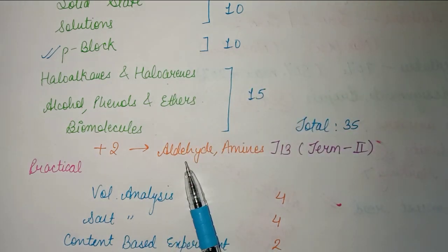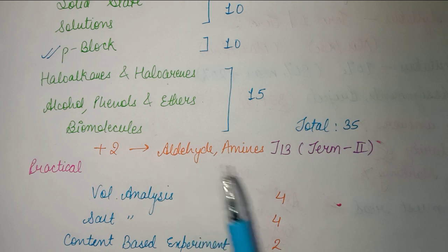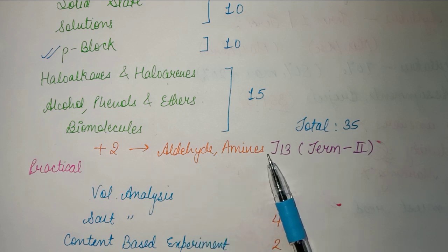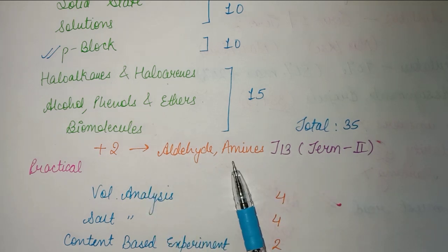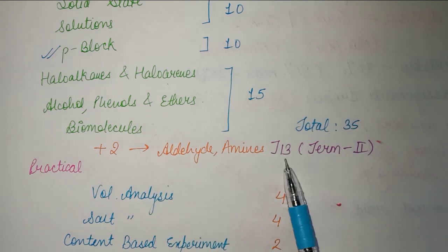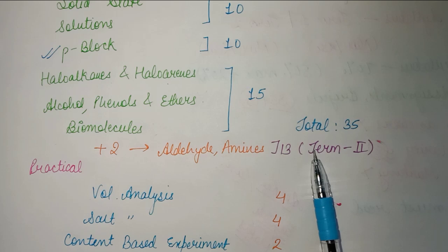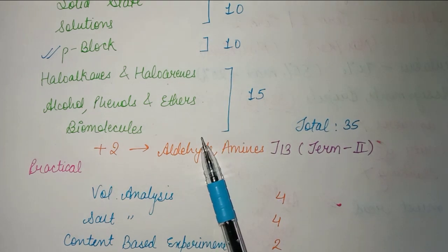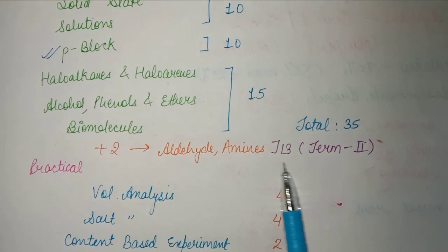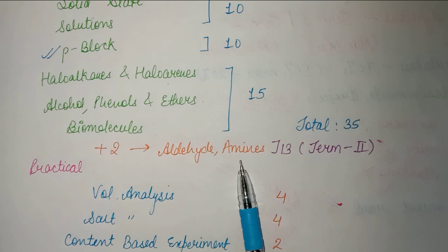For Term 2, the chapters include aldehydes, ketones, carboxylic acids, and amines — these two chapters together will cover 13 marks. So whenever you prepare organic chemistry, make sure to cover these chapters as well.